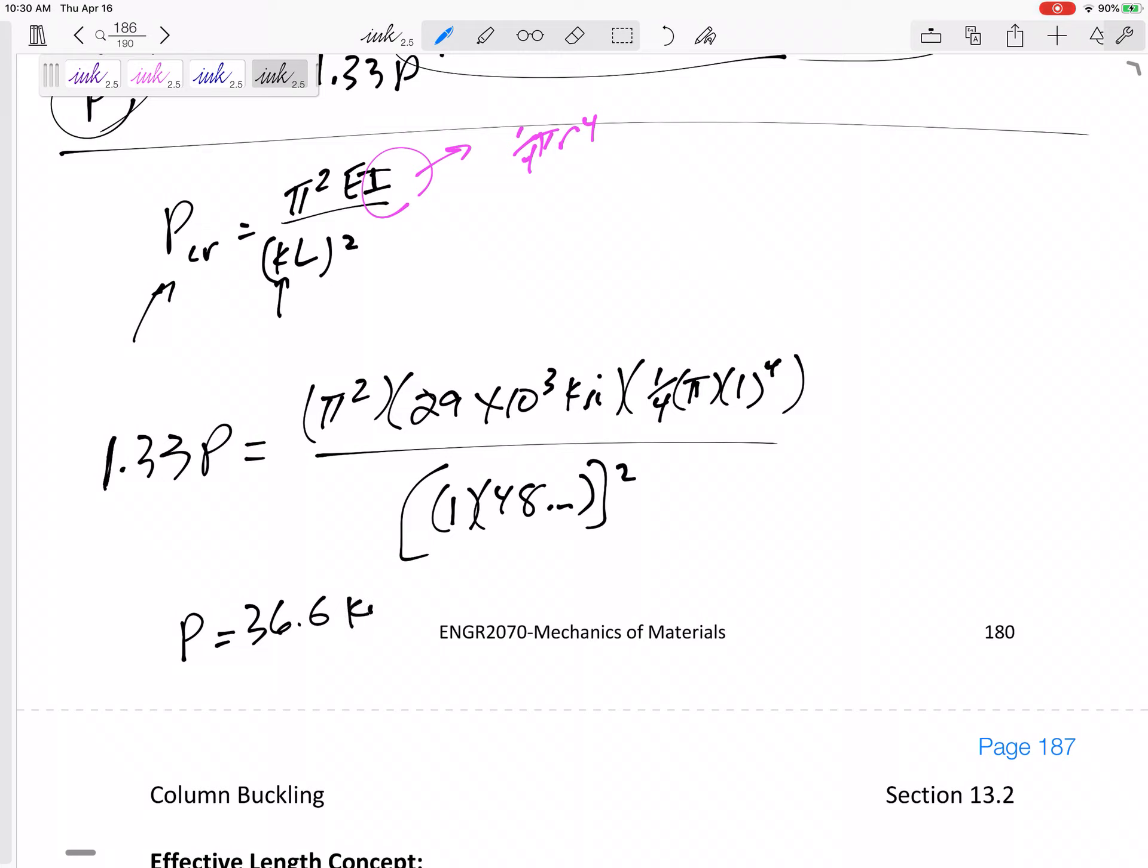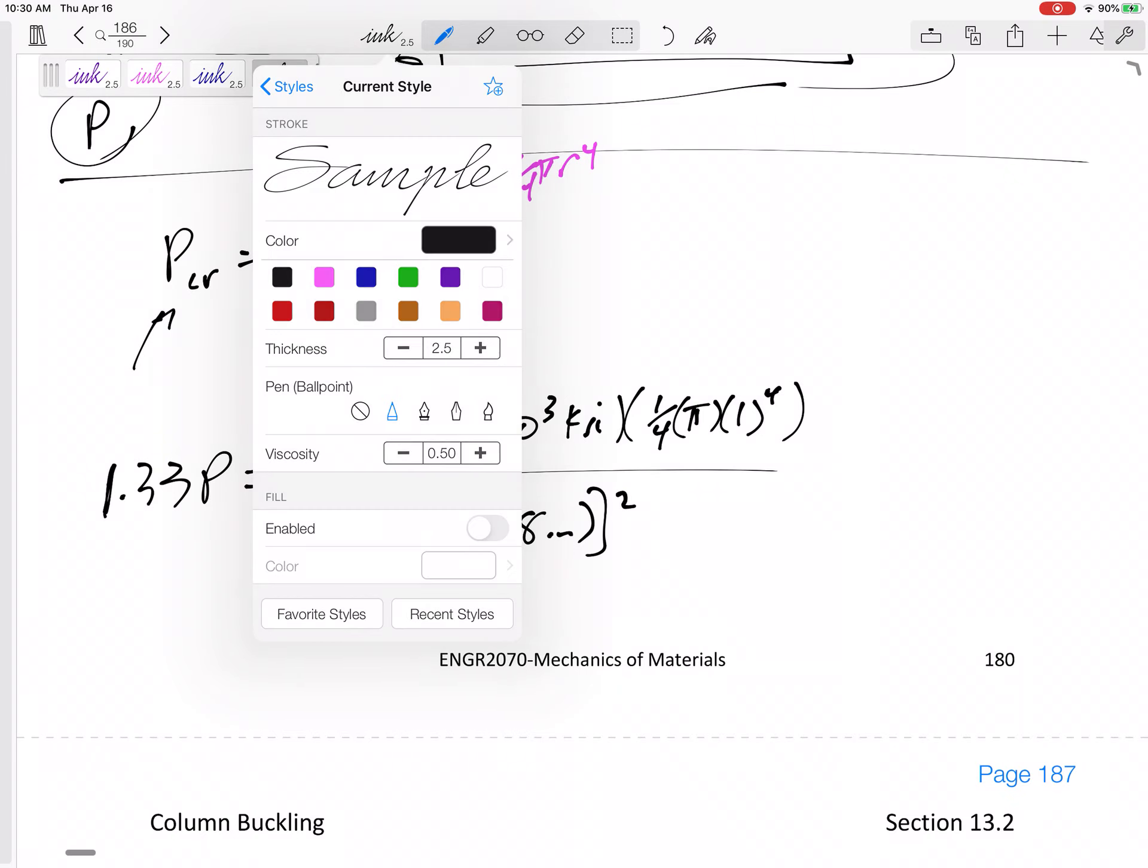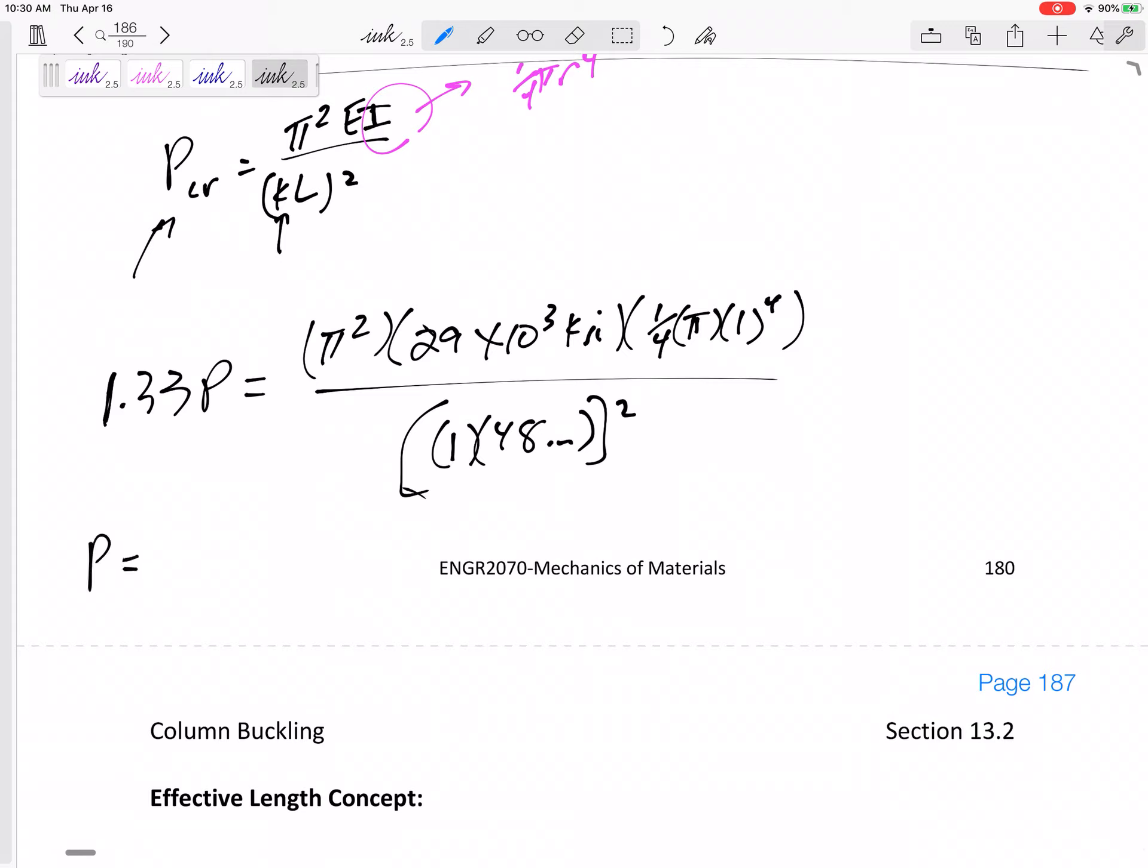P is 36.6 Kips. Oh, I forgot the factor of safety. If we have a factor of safety of two against buckling, this would actually be 73.2 Kips. But if I want to guard against buckling using a factor of safety of two, then I'm only going to allow it to get up to 36.6 Kips.